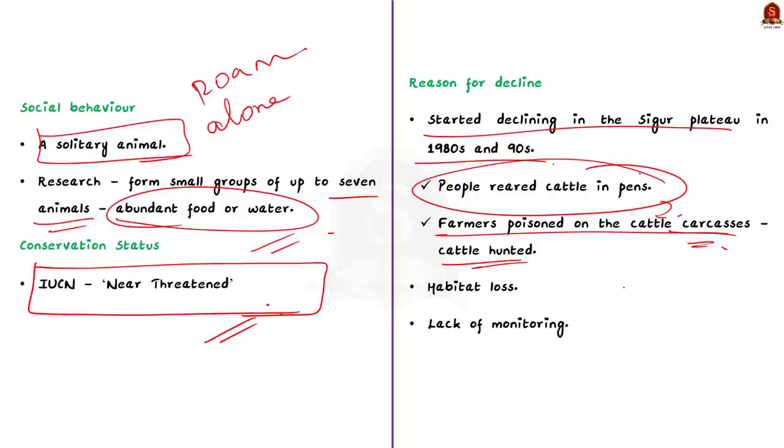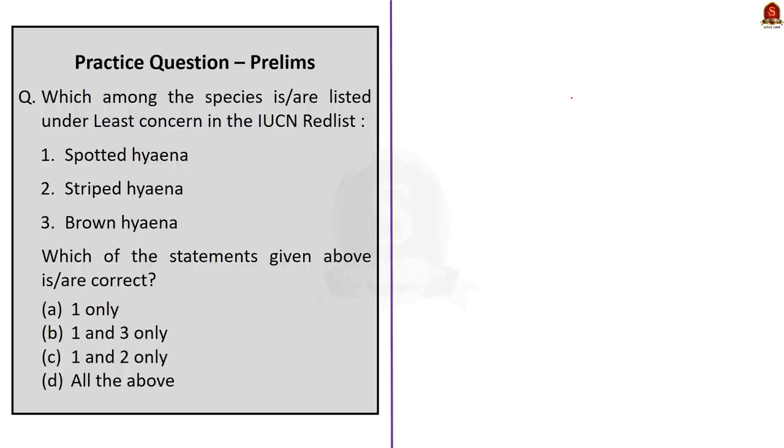The reason for decline does not just end with these. There are so many reasons like habitat loss, etc. Lack of monitoring is being one of the major reasons for population decline. So that's all regarding this news article. In this news article, we talked about striped hyena, its physical features, habitat and food habits. Then we have seen that the IUCN has categorized it as near-threatened species on a global scale. Then we have seen about the reasons for decline of striped hyenas.